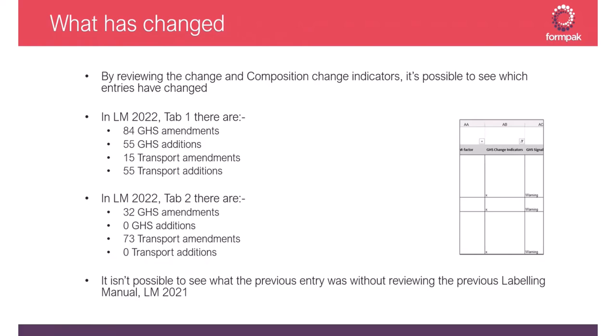By reviewing the change and composition change indicators it's possible to see which entries have changed since the previous year's labeling manual. In tab one there are 84 amendments to the GHS classification, 55 additions to the GHS, 15 transport amendments, and 55 transport additions. In tab two: 32 GHS amendments, zero additions, 73 transport amendments, and zero additions. It isn't possible to see the previous year's entry without looking at the sheet issued for the previous year.